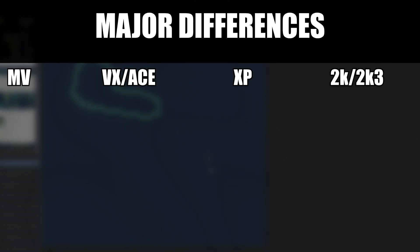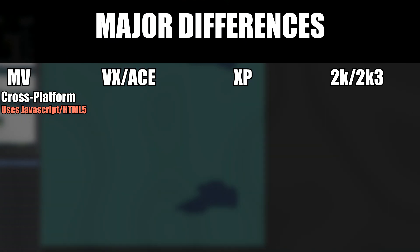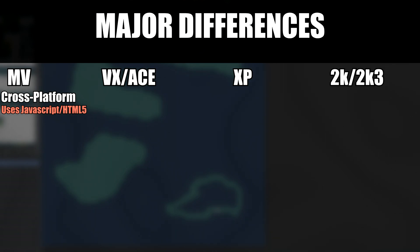One of the biggest reasons to choose RPG Maker MV over VX Ace or under is because of its ability to export to HTML5. This allows you to port the game over to Android or iOS, as well as upload your game directly to be played in the web browser on websites like itch.io or your own personal website. Being in HTML5, RPG Maker MV is generally playable through a lot of different devices and CPU architectures — theoretically, your game should be able to run on an ARM-based CPU or an x86 CPU without much of a hassle. MV also lets you export for Mac and Linux.